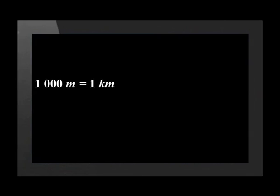There are 1000 meters in a kilometer. To convert meters into kilometers, we must divide by 1000. 100 meters divided by 1000 is equal to 0.1 kilometers.